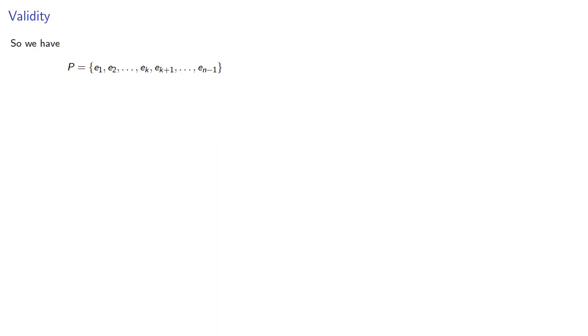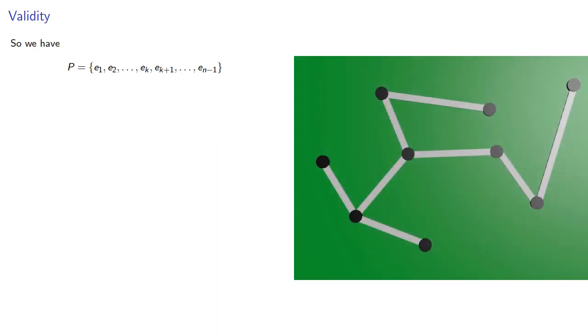So, we have our tree generated by Prim's algorithm, and then we have M, where the first few edges are the same as those chosen by Prim's algorithm, but at some point we choose a different edge than what Prim's would have chosen.